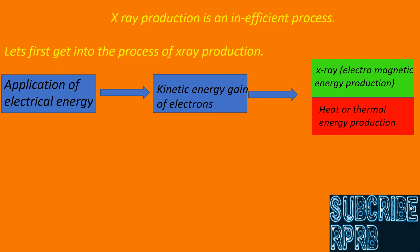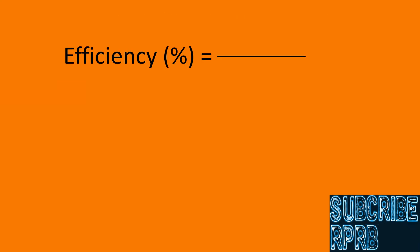So, electrical energy is our input energy, X-ray production is our desired output in the X-ray tube, and heat production is a loss. Efficiency is simply a ratio of useful output energy and total input energy used in a process — or in other words, the fraction of input converted to required output.